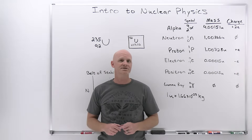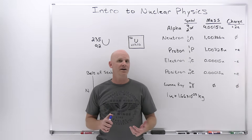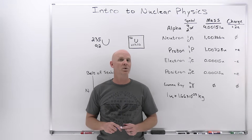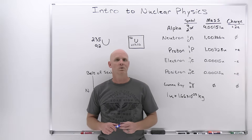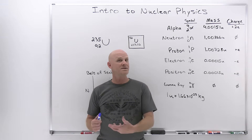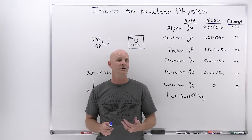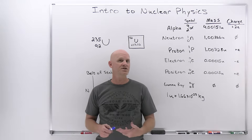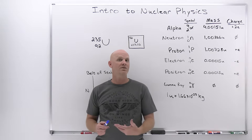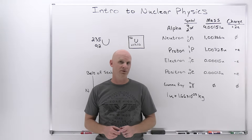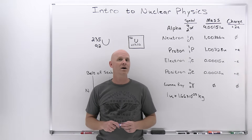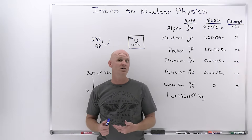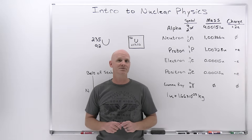This lesson is going to be an introduction to nuclear physics. We'll start by identifying a number of different nuclear particles, move on to talking about atomic symbols and how those can be used to figure out the composition of a nucleus and how that relates to nuclear stability. And finally, we'll top this lesson off by talking about nuclear binding energy, which also has a relationship to nuclear stability.